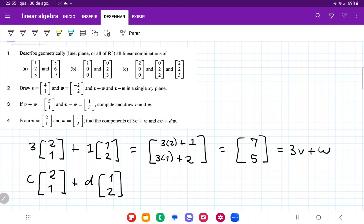So when we do this, we're going to have 2 times c, so that is going to be 2c plus 1d, or 2c plus d.